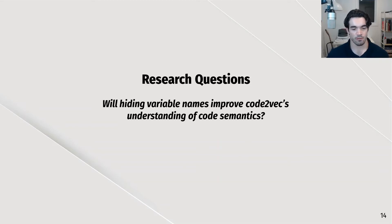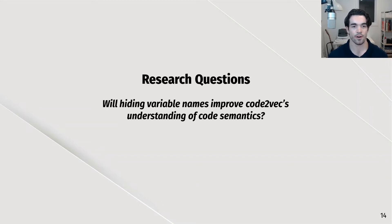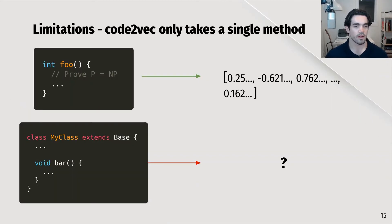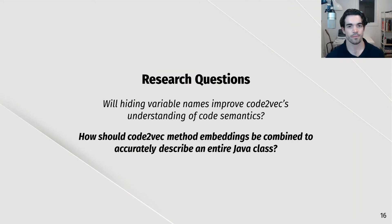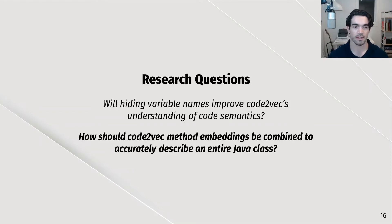These aren't even difficult adversarial examples — you'd quite reasonably see them in a codebase. More importantly, similar behavior could occur on code where variable names aren't even trustworthy, for example malware. This problem leads us to the first research question: will hiding variable names improve Code2Vec's understanding of code semantics? The other limitation is that the model can only embed a single method, so we can't create whole-class embeddings, which leads to the second research question: how should Code2Vec method embeddings be combined to accurately describe an entire Java class?